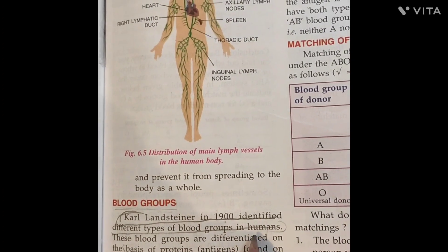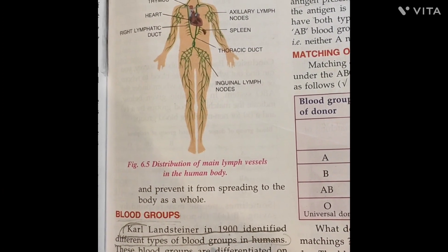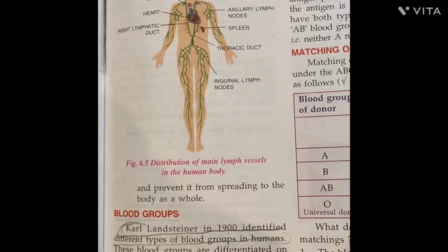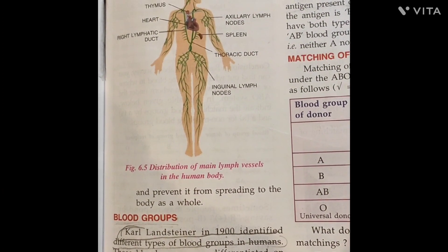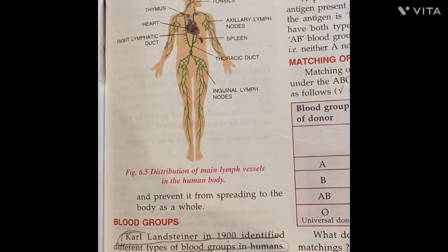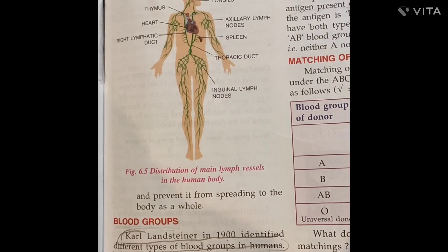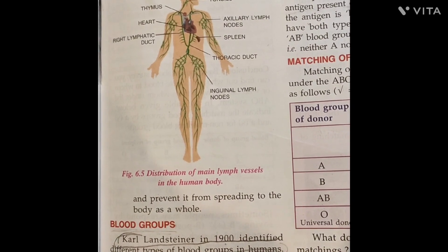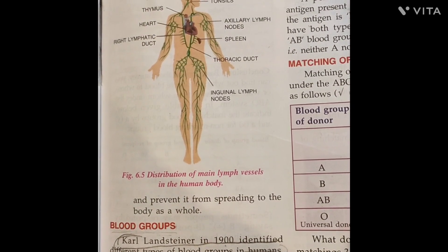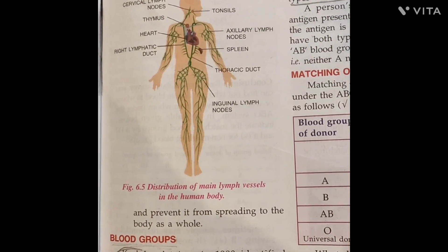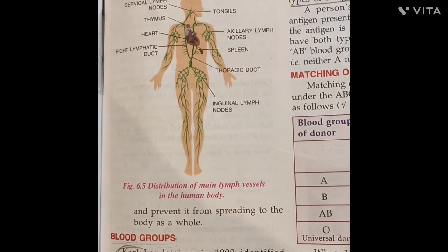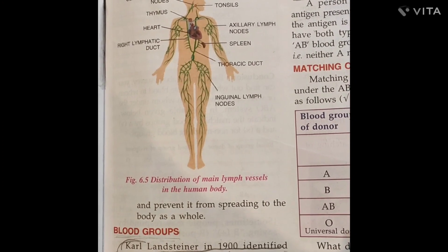There are four types of blood groups: A, B, AB, and O. Now, how do we differentiate these blood groups?